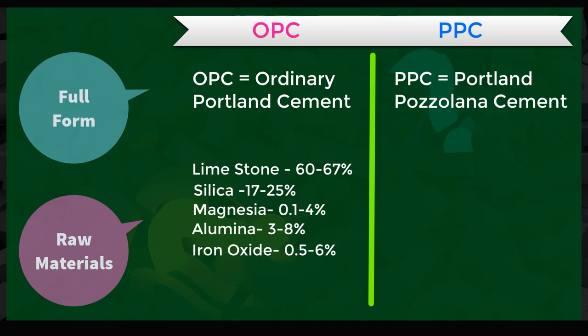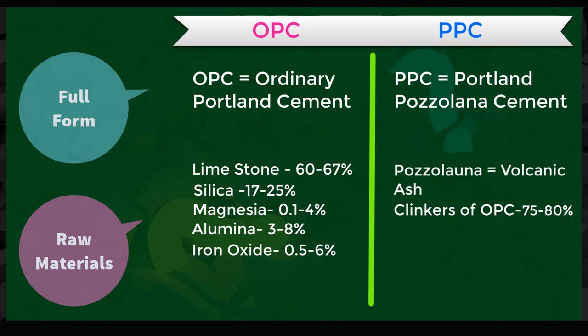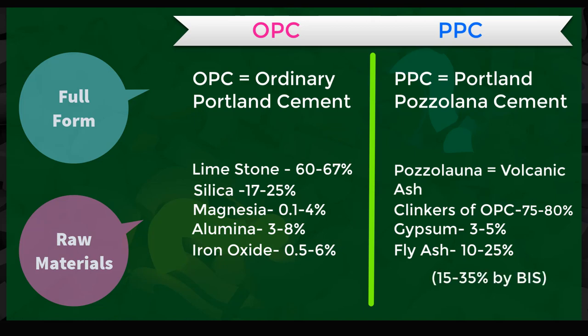Now coming to PPC cement — the word Pozzolana comes from pozzolana, which is a form of volcanic ash. The major raw materials are: OPC clinkers at 75 to 80%, gypsum at 3 to 5%, and pozzolanic materials like fly ash, rice husk powder, or shell clay at 10 to 25%, which has now been increased to 15 to 35% by the Bureau of Indian Standards.